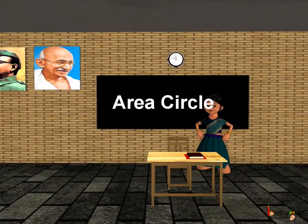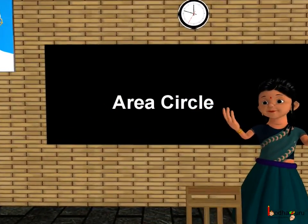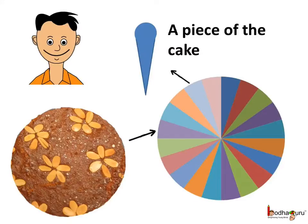Good morning children. Today we shall learn about the area of a circle. It's Aman's birthday today. Aman cut his birthday cake into 20 equal pieces for his friends.